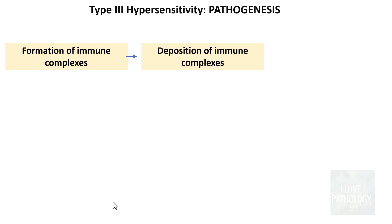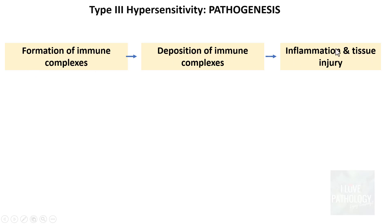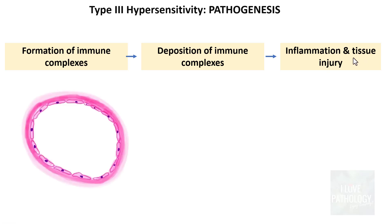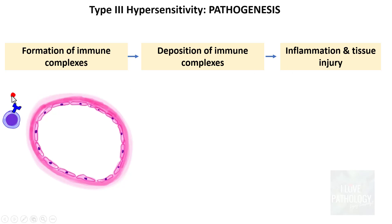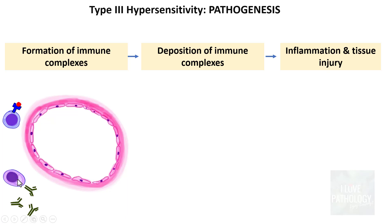Now let us understand the pathogenesis of type 3 hypersensitivity. The sequential steps are: first, formation of immune complexes; second, deposition of those complexes; and finally, inflammation and tissue injury. Let us assume we are looking at a blood vessel with a circulating antigen.